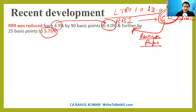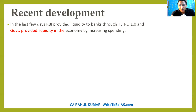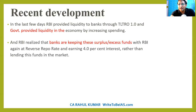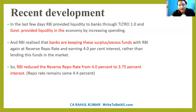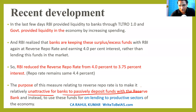The reverse repo rate was decreased so that commercial banks have no incentive to deposit money with the RBI. Because of increasing liquidity, banks were keeping money with the RBI at 4% reverse repo rate, so it was further decreased to 3.75%. The purpose is to ensure that the reverse repo remains unattractive for banks to passively deposit money, and this money can instead be given as loans to productive sectors.